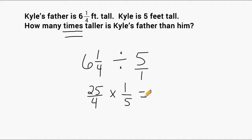If we multiply 25 by 1, we get 25, and 4 times 5 is a product of 20.